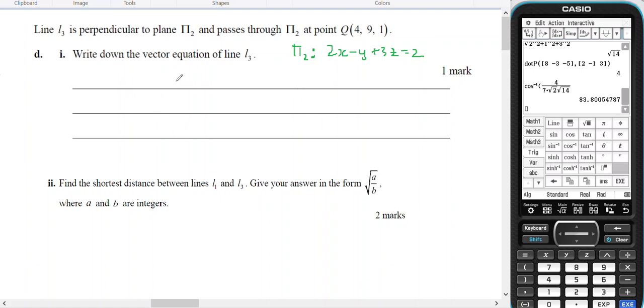So part D, write down the vector to line 3. Line 3 is perpendicular to plane 2. So this is my equation of plane 2. So if this is plane 2,